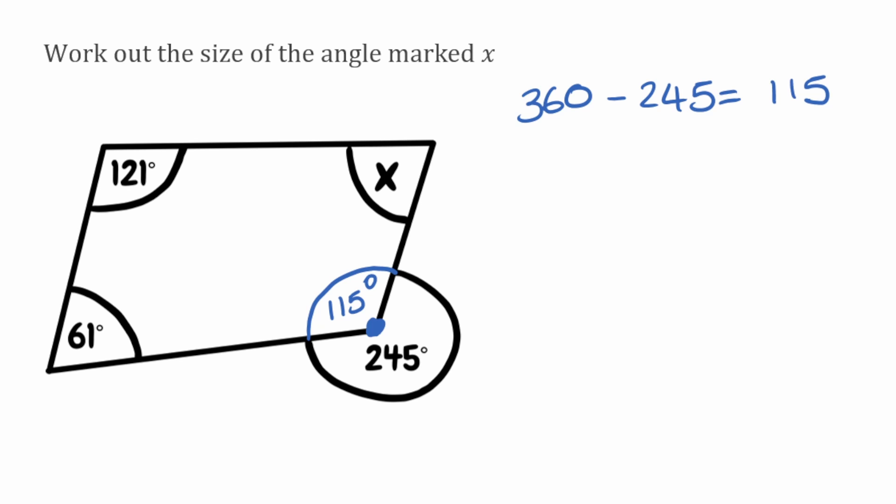So now that we've got three out of the four angles we can use the method that we've been using previously. We're going to add together the angles that we know in our quadrilateral. So we've got 121 plus 115 plus 61, and that's going to give us 297.